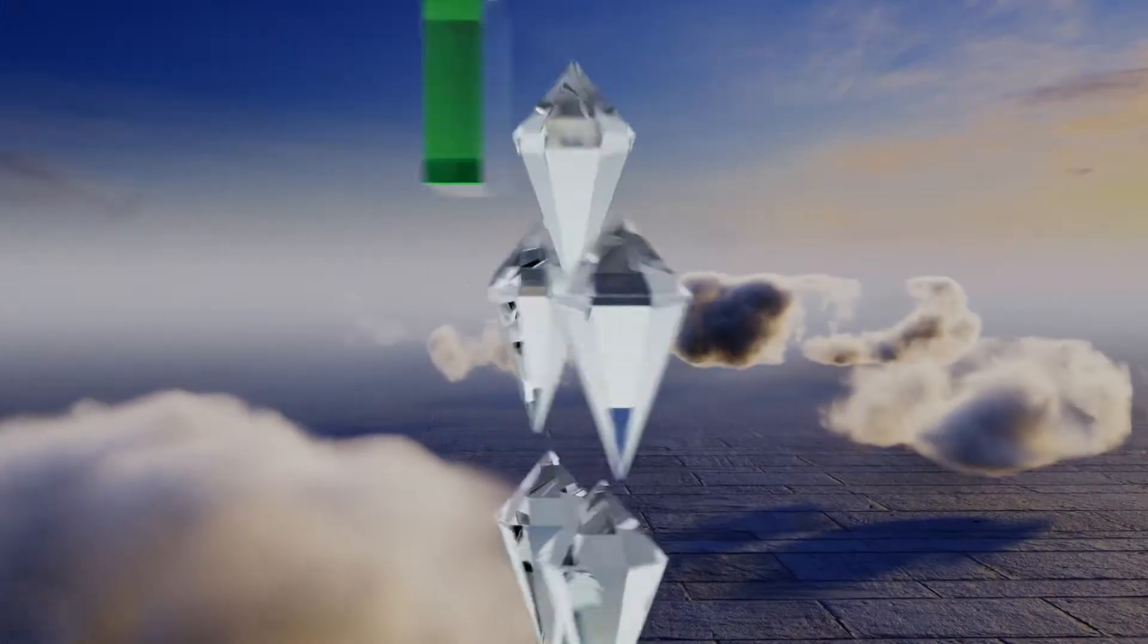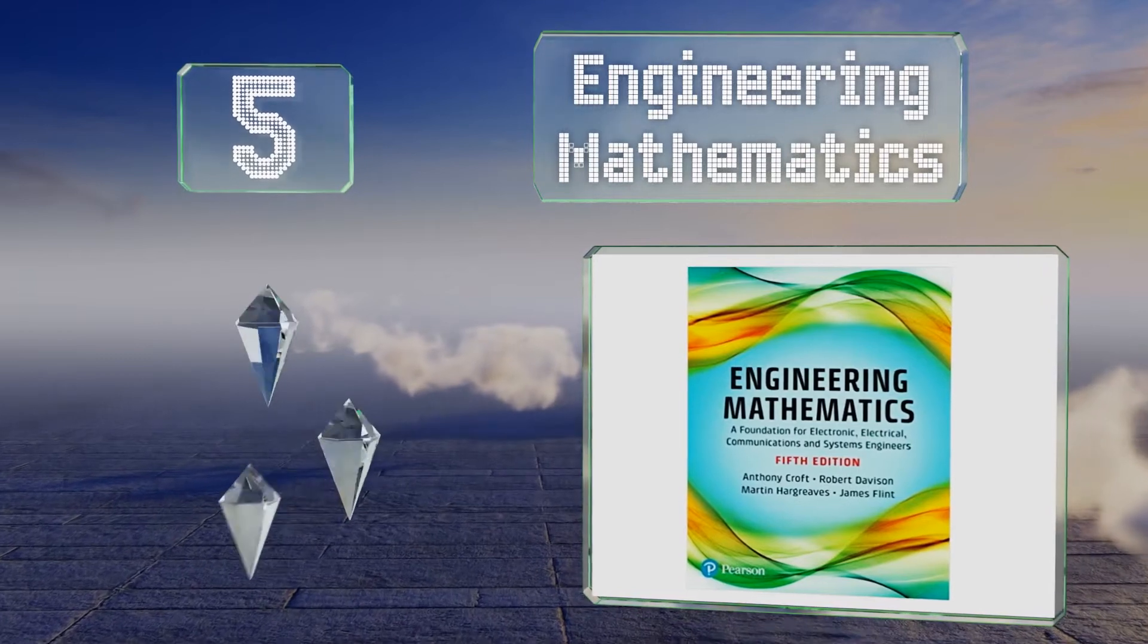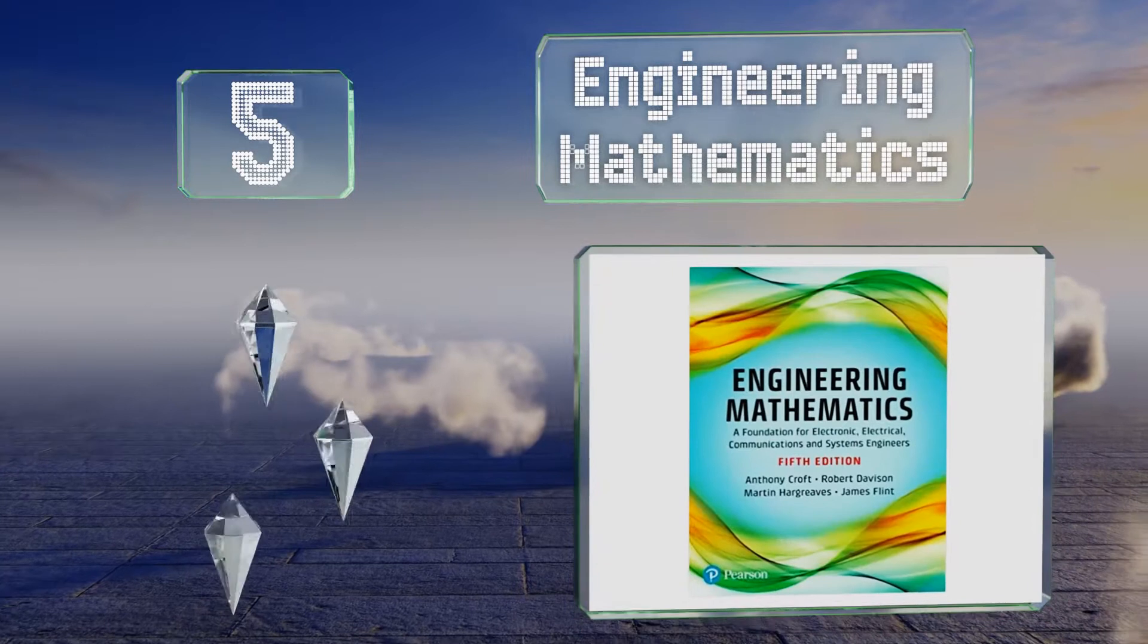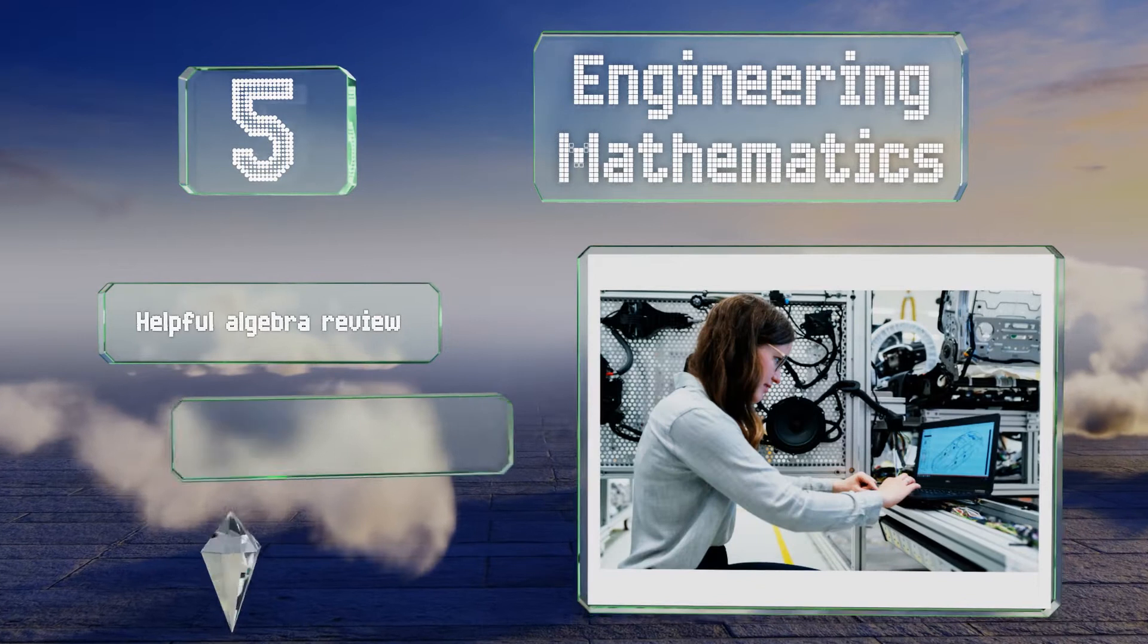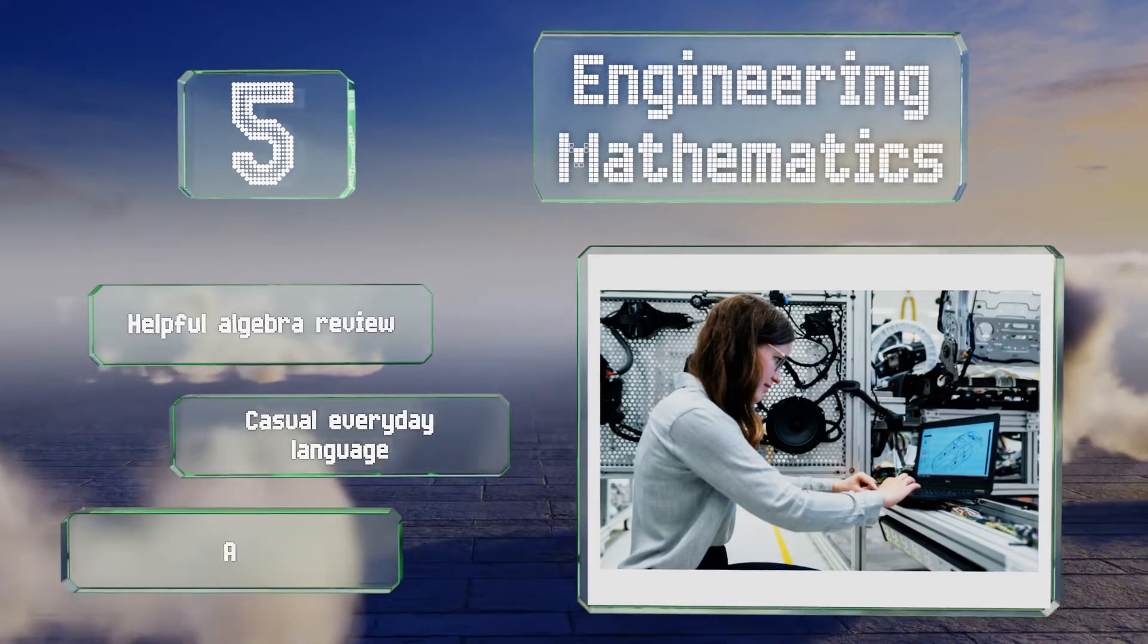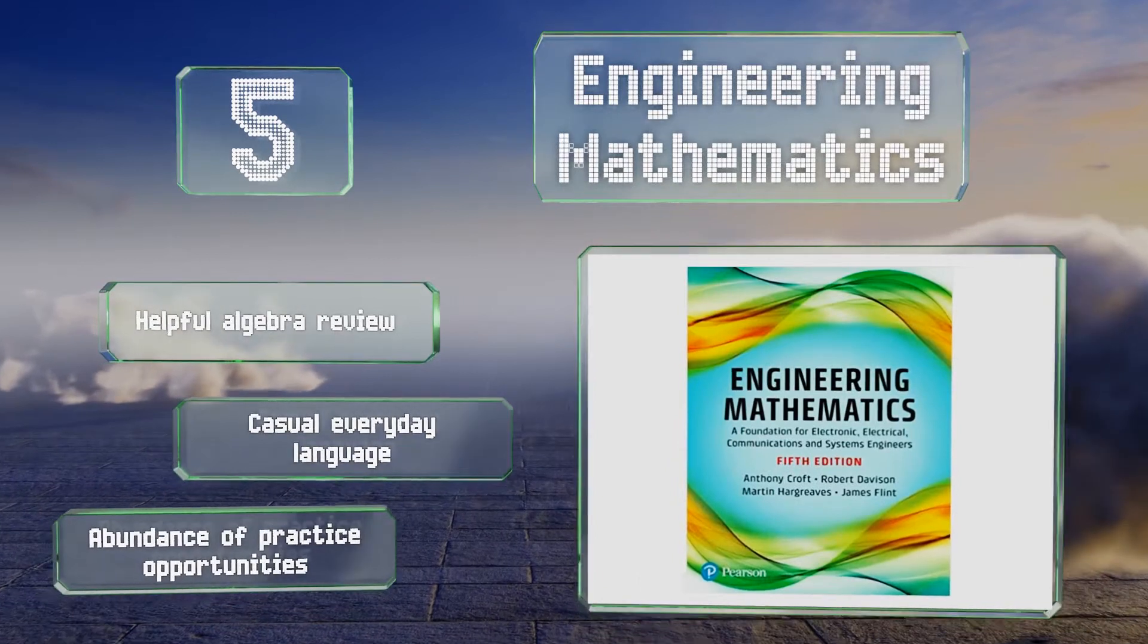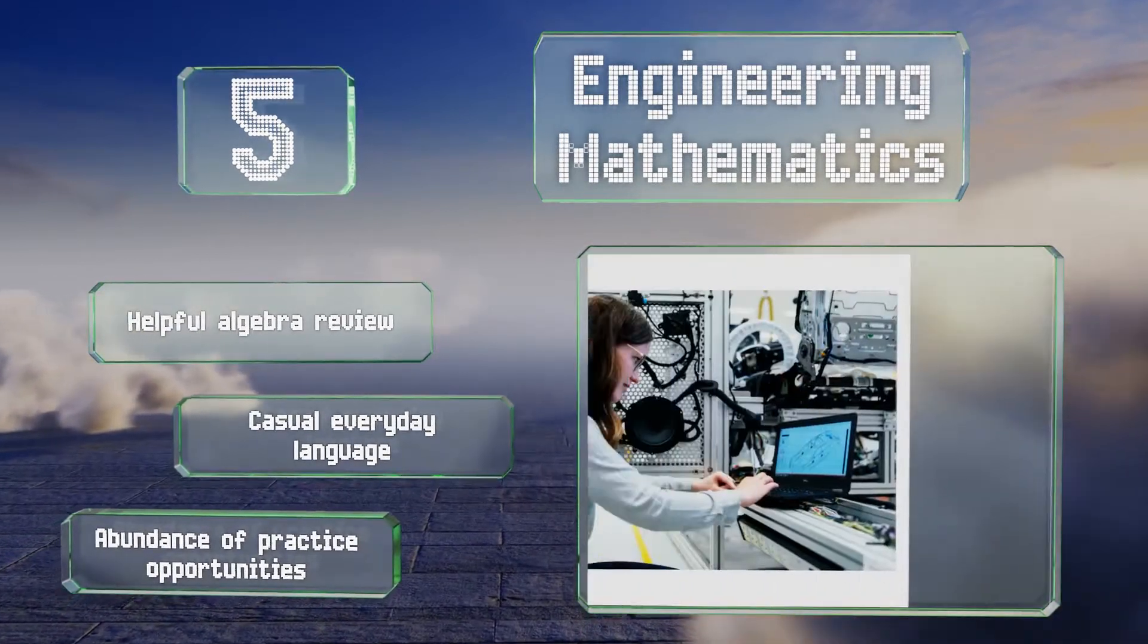Halfway up our list at number 5. While some books focus on the conceptual, Engineering Mathematics gets into the nitty-gritty of numbers. It should give you a solid foundation in the methods and techniques used in the industry and teaches you everything from complex analysis to vector calculus. It includes a helpful algebra review and is written with casual everyday language. It contains an abundance of practice opportunities.